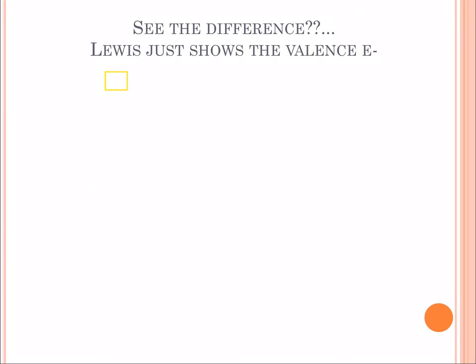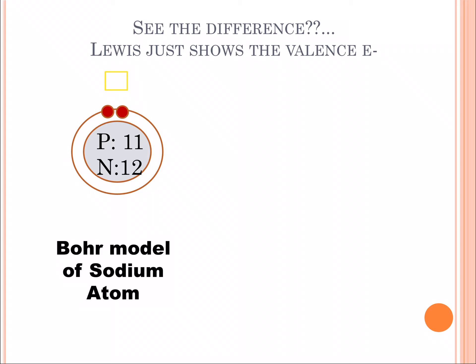It's like a Bohr diagram, but there's a lot less work because you're only focusing on the outer orbital.